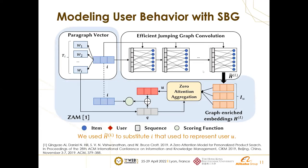Finally, we enrich product representations by applying efficient jumping graph convolutions on the successive behavior graph. In this work we use it as a showcase to demonstrate the effectiveness of SBG. It can also be potentially applied to any other product retrieval method that models users with their purchase history for personalized product search. After obtaining the enriched product representations, we substitute the original item representations with them, so this can work like a plug-in method.